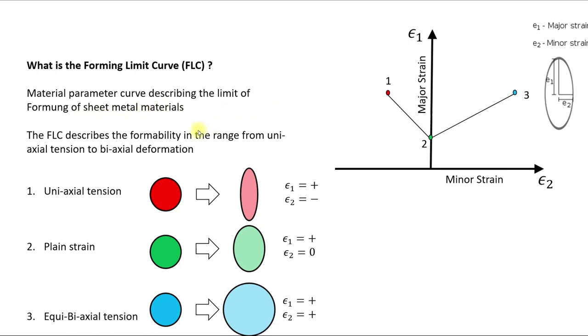The FLC is basically a material parameter curve describing the limits of forming for metal sheets. And the main points are that we have here: 1, Uniaxial Tension, then 2, Plane Strain and 3, Equi-Biaxial Tension.